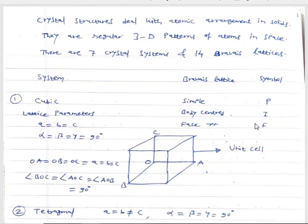Crystal structures deal with atomic arrangement in solids. They are regular 3D patterns of atoms in space. There are 7 crystal systems and 14 Bravais lattices. Crystal structures have definite atomic arrangements like the simple cubic, body-centered cubic, and face-centered cubic crystal structures. These are the three different types of Bravais lattices found in the cubic crystal system.